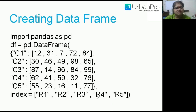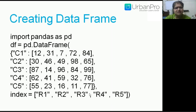After opening the bracket, I supply the data using curly braces in dictionary format — key-value pairs. The keys are C1, C2, C3, C4, C5 and the values are the data element lists. So C1 has values like 12, 31, 7, 72, 84; C2 has 30, 46, 49, 8, 98, 65, and so on — five key-value pairs simulating our dictionary non-primitive data structure.